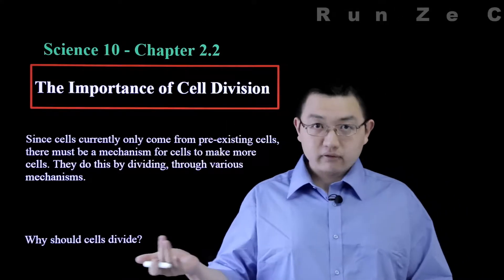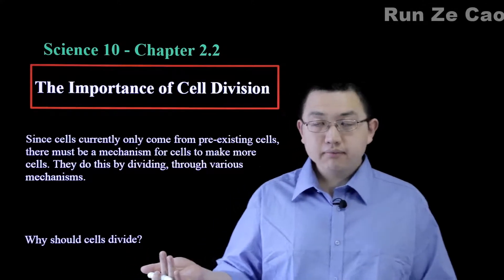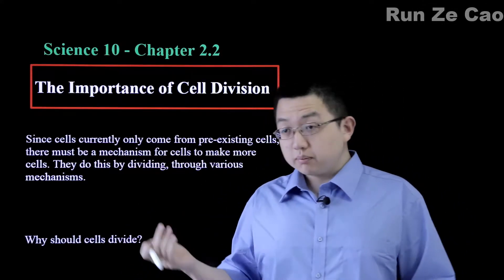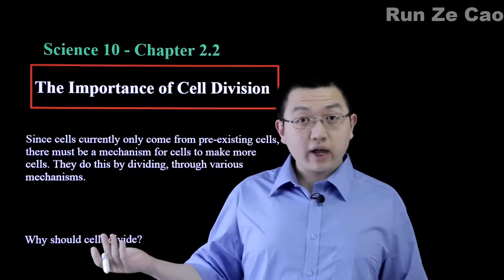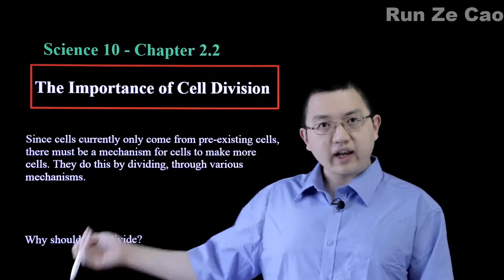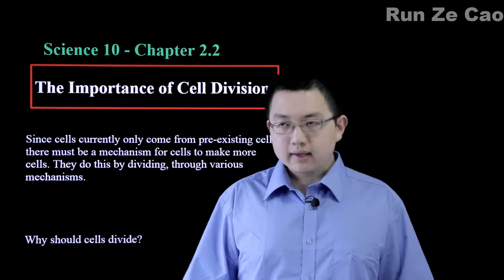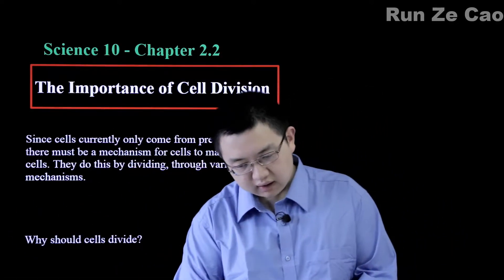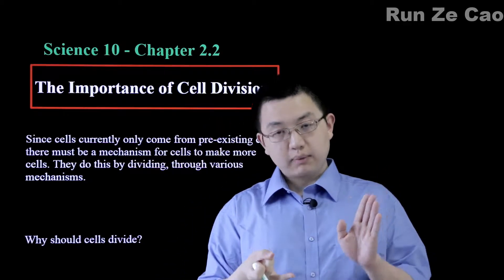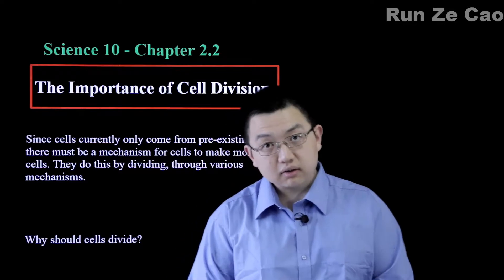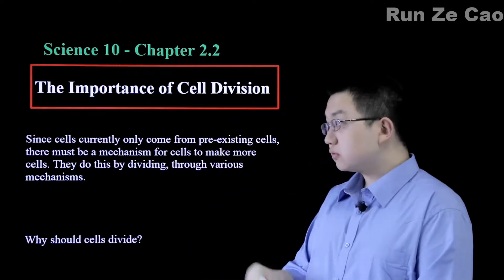We know that for now, right now at least, cells only come from pre-existing cells. So there must be some way that cells can make more cells. They do this by dividing. Now there are many mechanisms for cell division — for example, mitosis and cytokinesis, and there's the more primitive binary fission, and there's budding, and so on.